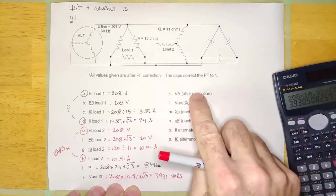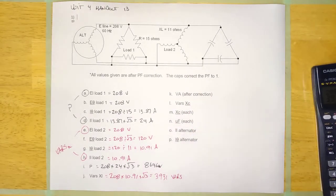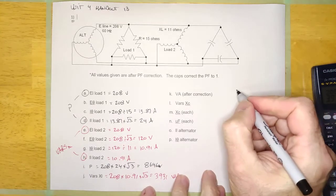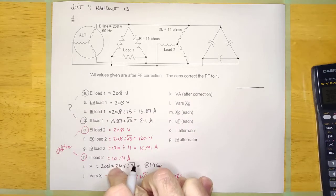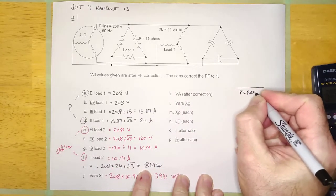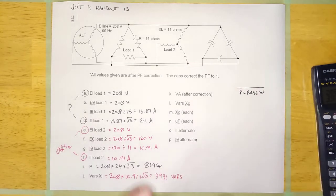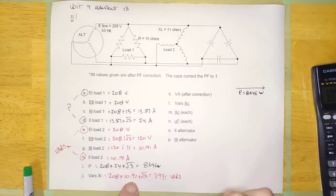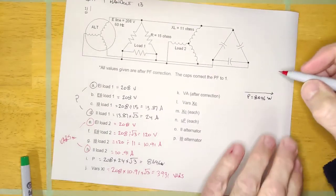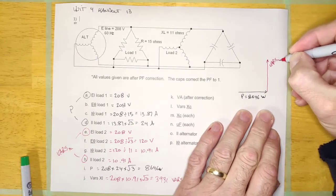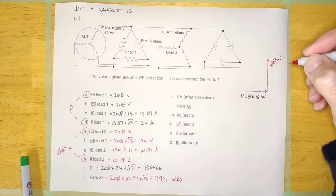VA after correction — this thing is going to get corrected to unity. Let's draw a power phasor diagram. We're going to have our true power, which we figured out: 8,646 watts. We're also going to have the inductor sitting right here as vars XL, and it looks like it's 3,931 vars.